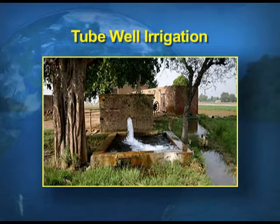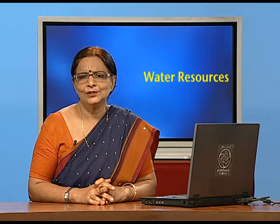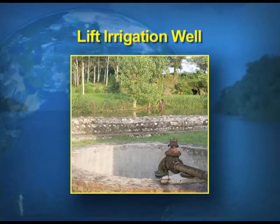Now we talk about tubewells and well irrigation. Tubewells and wells are two means through which we use groundwater. Tubewell irrigation is when water is pumped out by energy-driven tubewells — you might have seen how fields are irrigated by tubewells in villages. Wells are another means, though lift irrigation through wells is now almost not in practice and represents a very remote type of irrigation means.